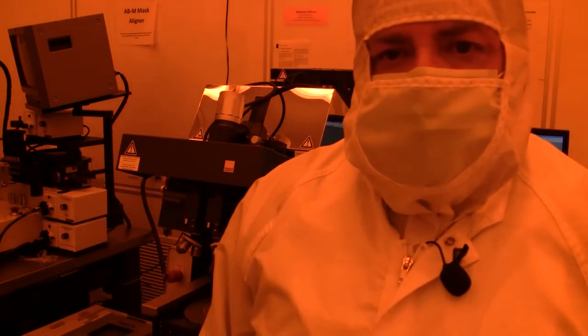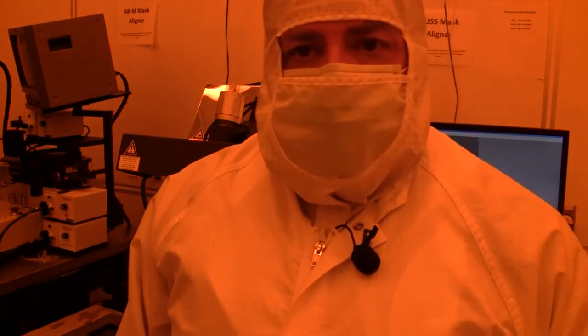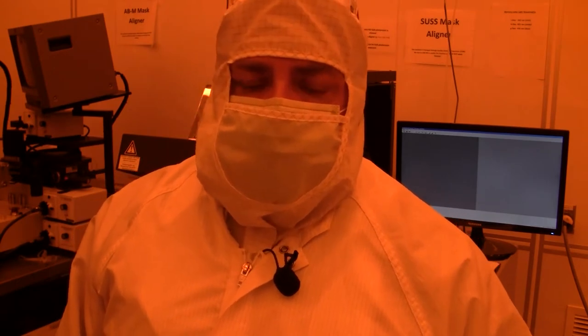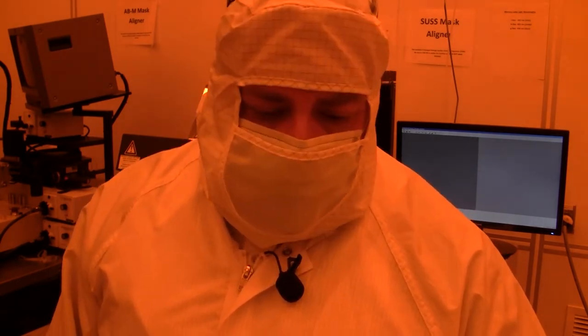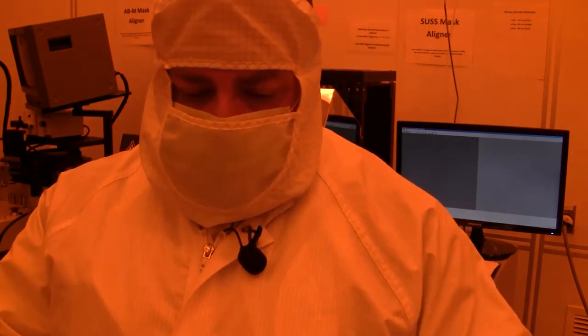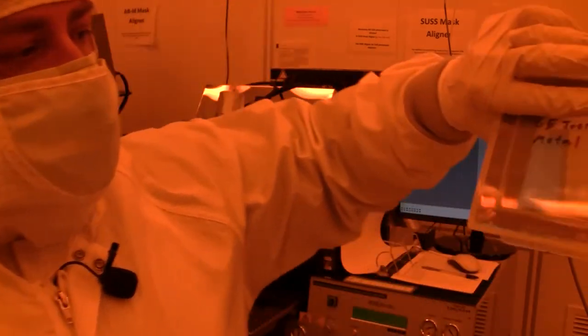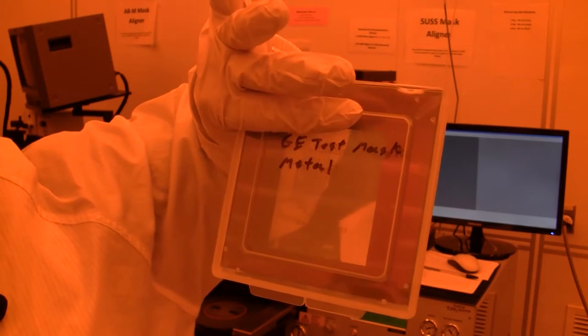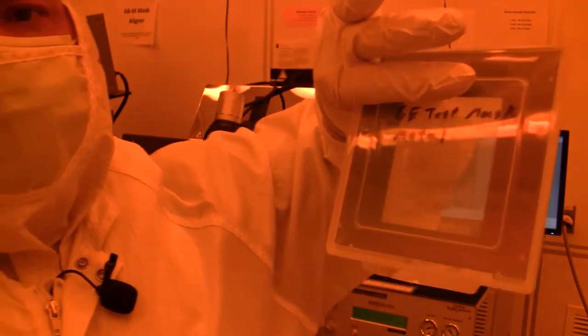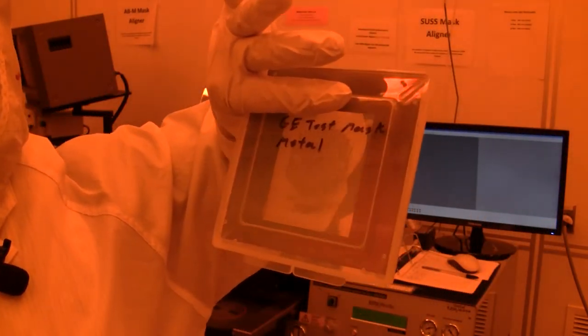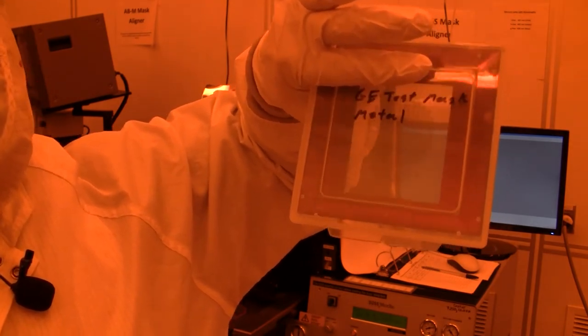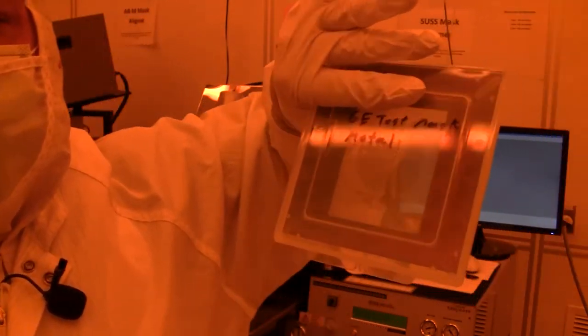So I am going to do step two on our test structures for germanium. This is the germanium test mask, the metal. These are two inch wafers. So we're going to go ahead and put this in the mask aligner, and I'm going to show you how this works.